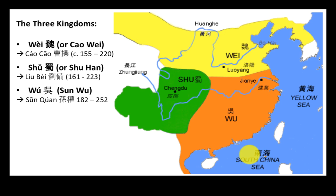We have the kingdom of Shu, or Shu Han — the green part on the left, centered around modern-day Chengdu in what is today's Sichuan. It is the kingdom associated with Liu Bei, another one of our main heroes in the novel, whom we will encounter right away in chapter one. And then there is the kingdom of Wu, or Sun Wu, in the south along the Yangtze — the Changjiang, the great river — associated with Sun Quan and the Sun clan, also sometimes referred to as the southern kingdom.